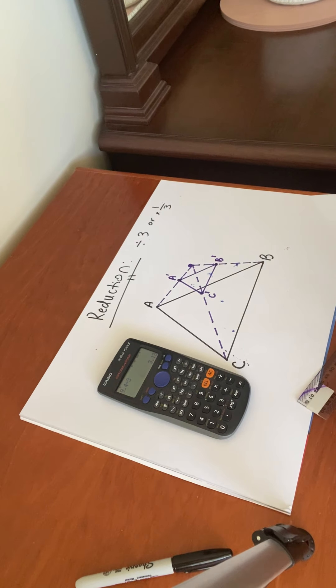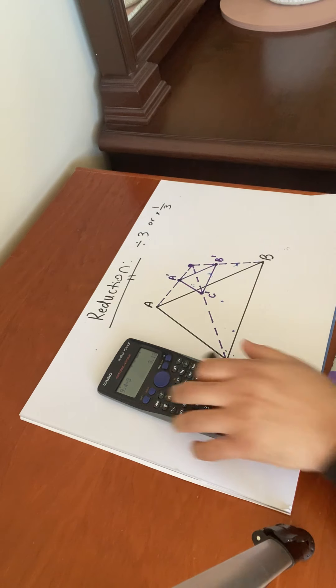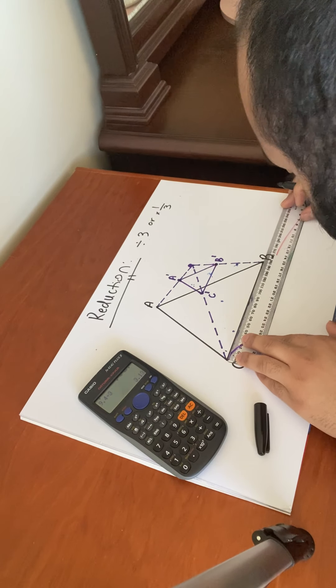There we go, that's our reduced image. So the black triangle, which is the larger triangle, represents our starting image or original image. And we shrunk it by a third, and we've got this purple triangle. Okay, and as with enlargement before, we can measure the distances.